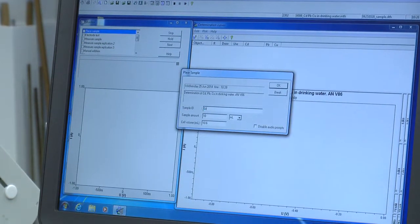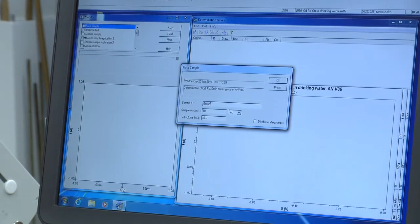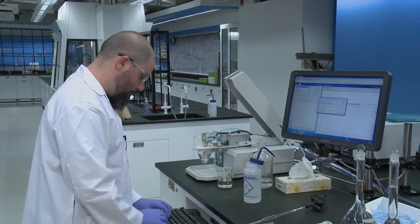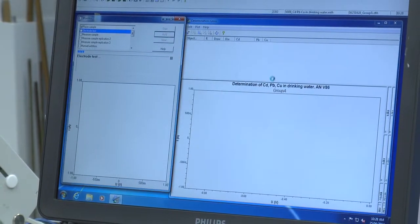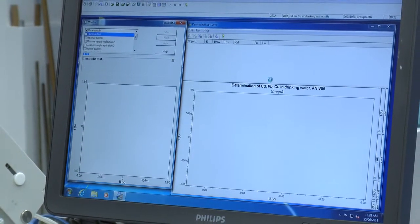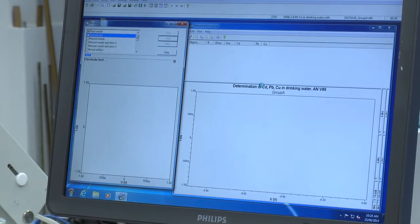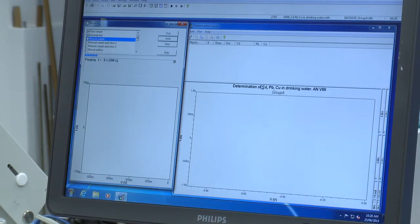Here you'll want to type in something that identifies yourself and your group, and click ok. The instrument will go through a series of tests and then it will prompt you to inject the standard addition.